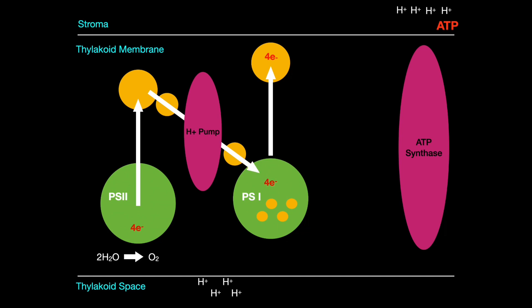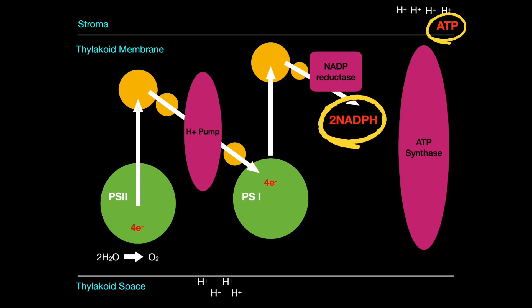The excited electrons that were captured by the electron acceptor then pass down a second electron transport chain, again losing energy as they do so. In this process the enzyme NADP reductase catalyzes the transfer of the electrons to the final electron carrier NADP+. Each NADP+ requires two electrons to be reduced to NADPH. Since hydrogen ions are required for this, although what we see here is a model, the reduction of NADP+ actually occurs on the stroma side of the thylakoid membrane.